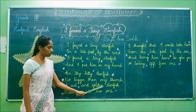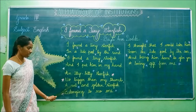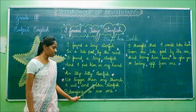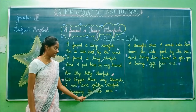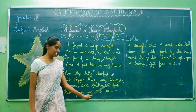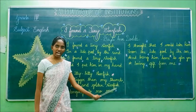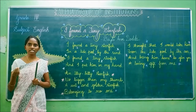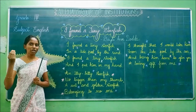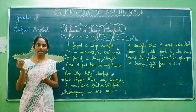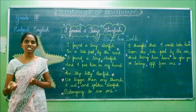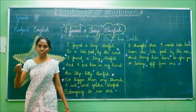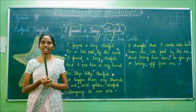A wet and golden starfish. Wet, W-E-T, and golden, G-O-L-D-E-N, starfish, S-T-A-R-F-I-S-H. The poet says the starfish is wet and it is golden in color. How is the starfish? The starfish is wet and it looks golden in color.